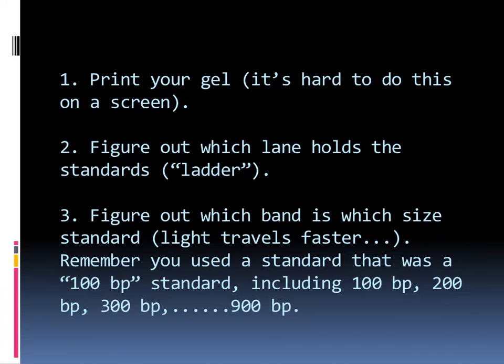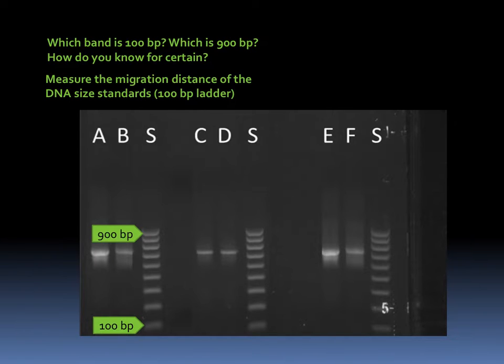Let's look at an image of a typical gel. Here's a typical gel. A through F are the lanes that contain test samples. S, all of the S lanes contain the molecular weight standards. We've got one, two, three lanes containing standards. We're going to take averages as you can see.